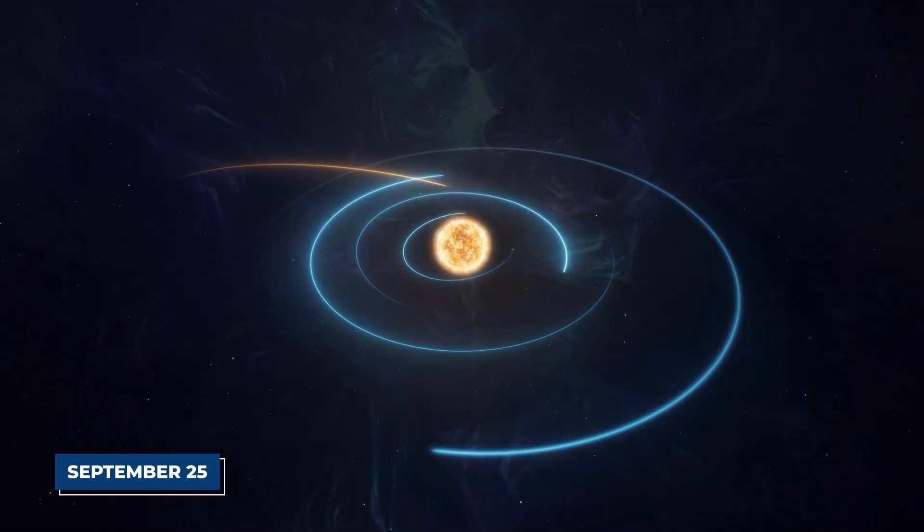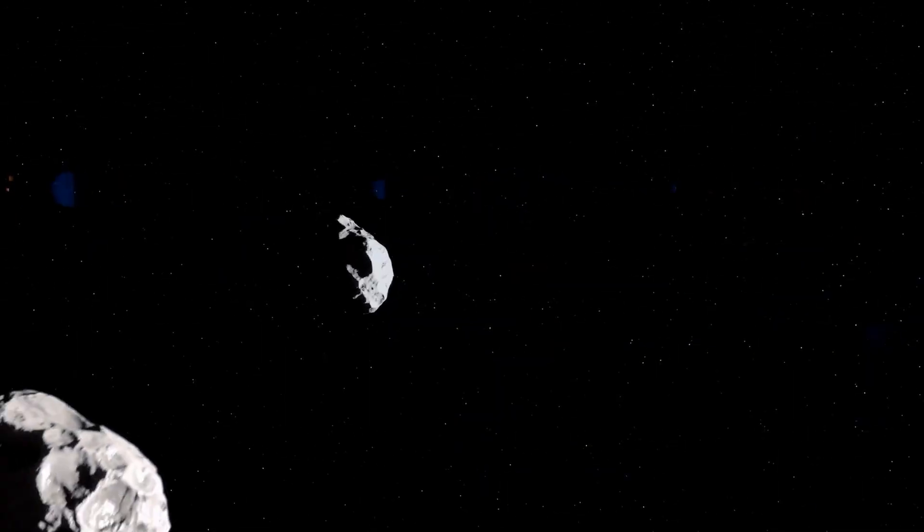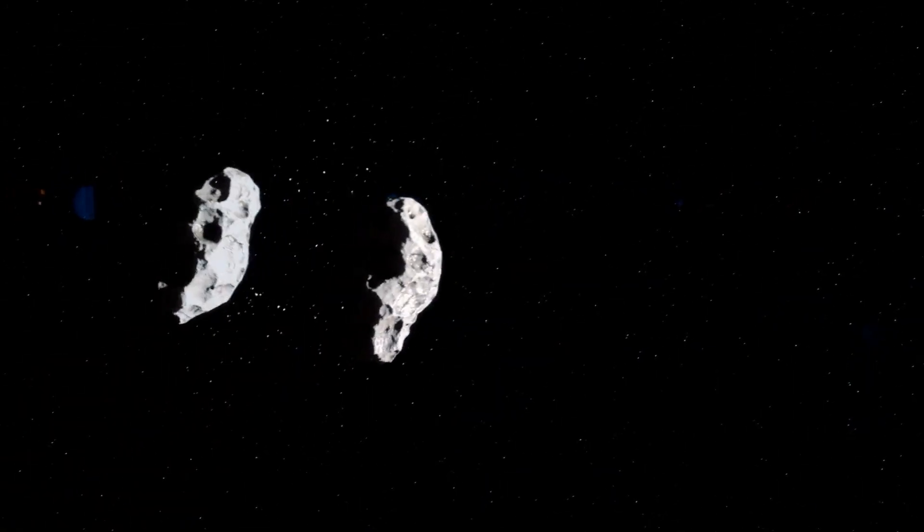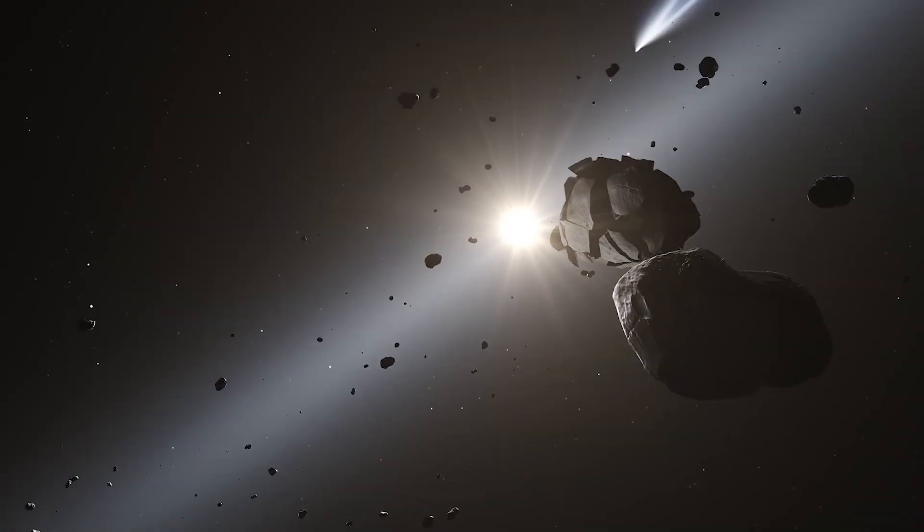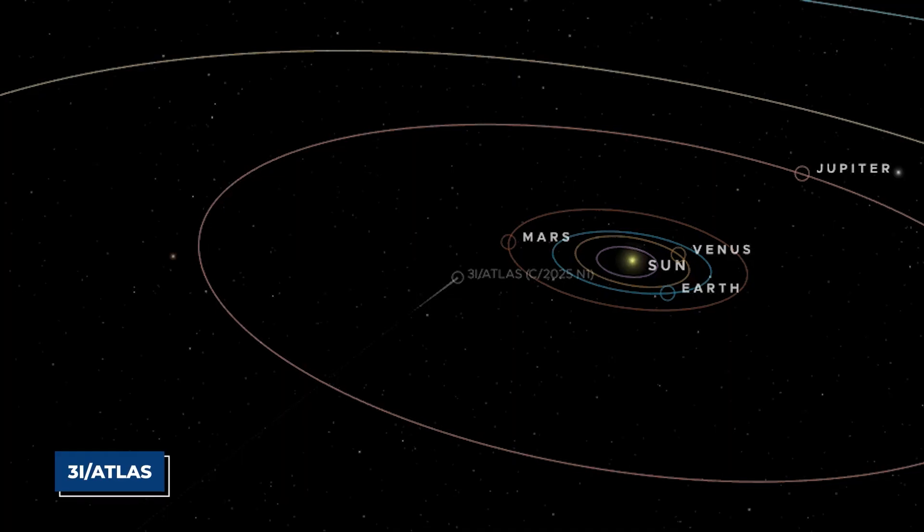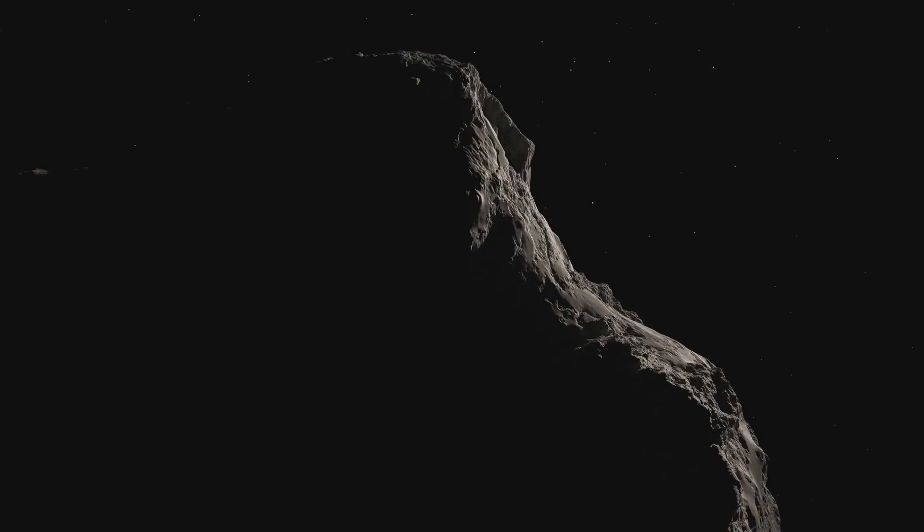On September 25th, a colossal wave of solar plasma, a coronal mass ejection, slammed into an object surrounded by a gas cloud half the size of the sun. But it didn't shatter. The object, known as 3I Atlas, held its ground.